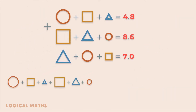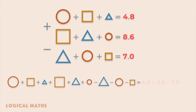Let's add the second equality to the first one, and subtract the third equality from the result. On the right side of the new equation we get 4.8 plus 8.6 minus 7, and it equals 6.4.